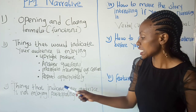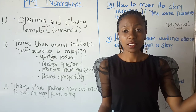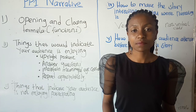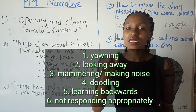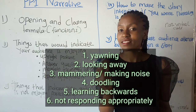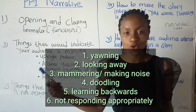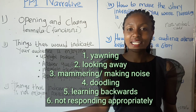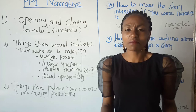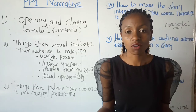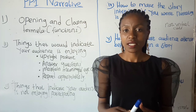Things that indicate your audience is NOT enjoying your story: number one, if the audience is yawning — they are not participating. If the audience is looking away, meaning they are not maintaining eye contact. If the audience is murmuring or making noise. Number three, if the audience is doodling — making unnecessary drawings. If the audience is leaning backward, or not responding appropriately — you crack a joke and they are not laughing, not nodding, not clapping.